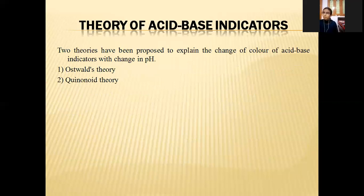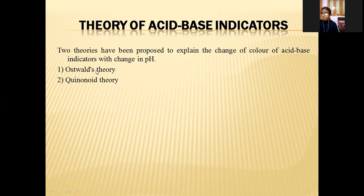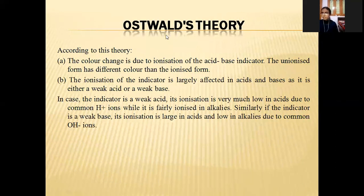Now let's see the theory of acid-base indicators. There are two theories: the first is Ostwald theory and the second is Quinoid theory. Let's look at what Ostwald theory states.